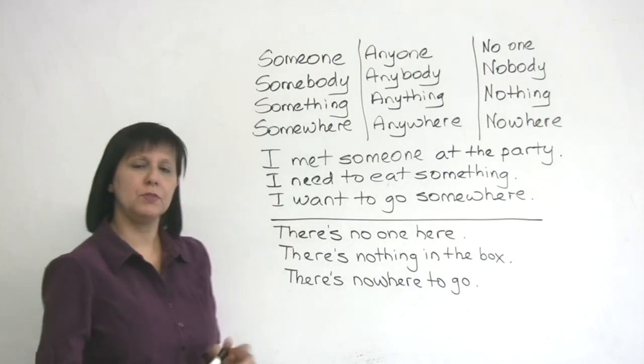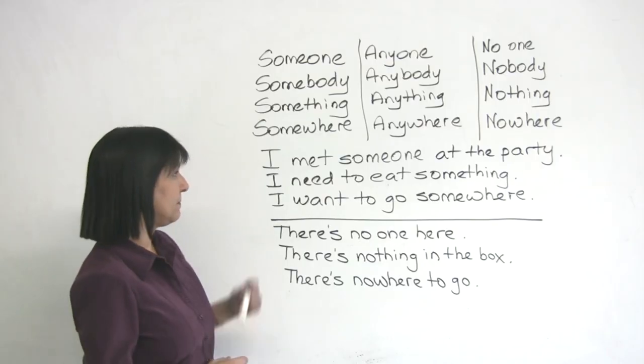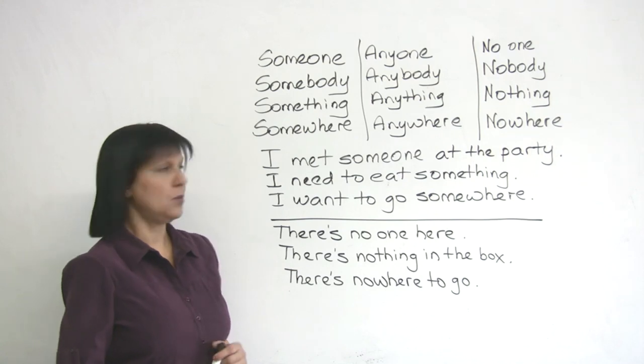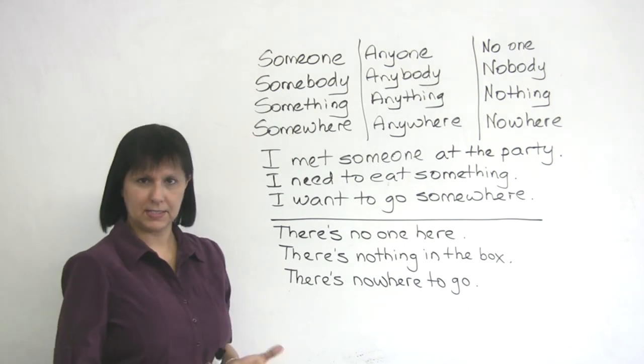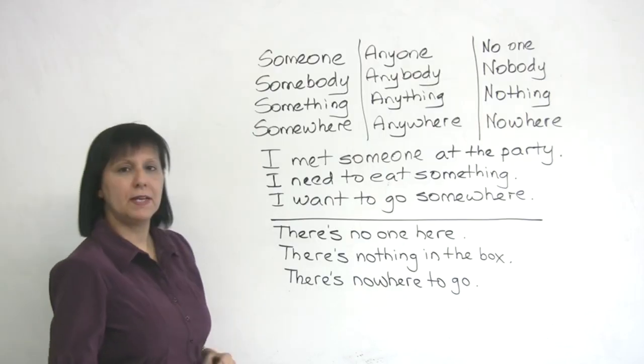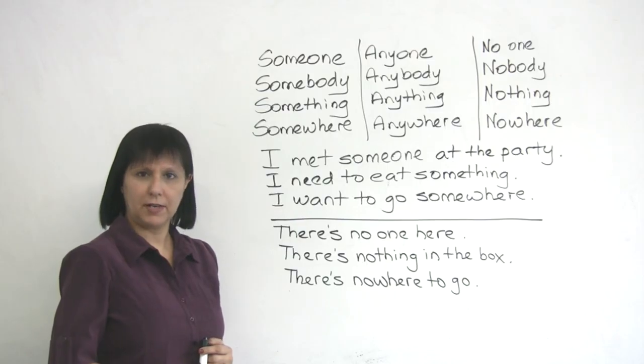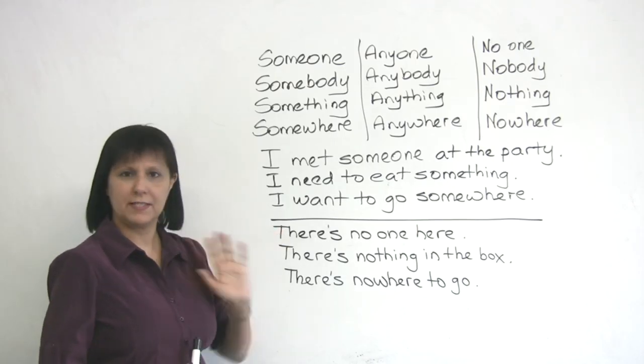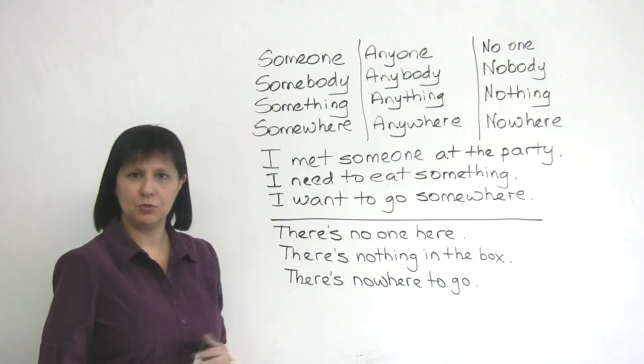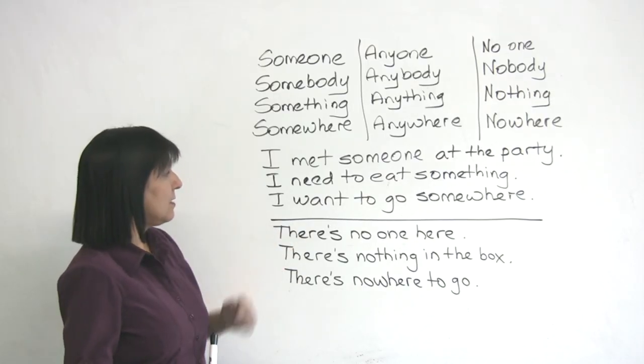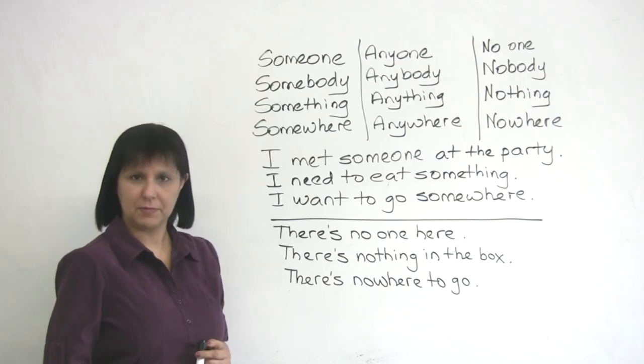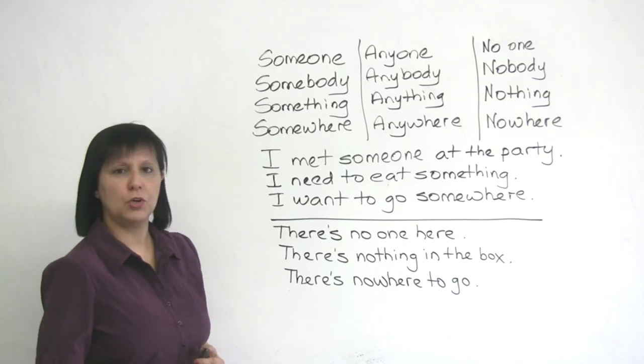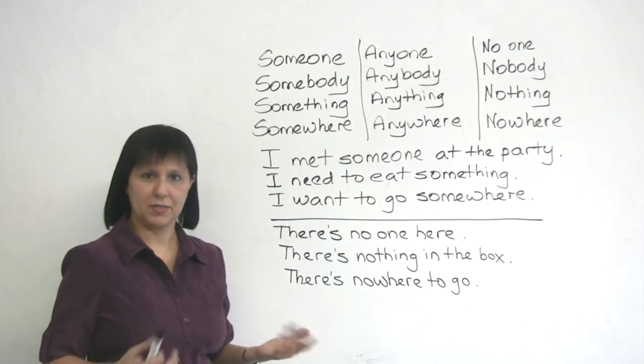So let's look at some examples so you can understand more clearly. I met someone at the party. We're using someone because it's a positive sentence. We could also say, I met somebody at the party, but generally speaking, someone is used more frequently. They are exactly the same, it's just someone tends to be used more often. Next example, I need to eat something, positive sentence. Or, I want to go somewhere, again, another positive sentence.